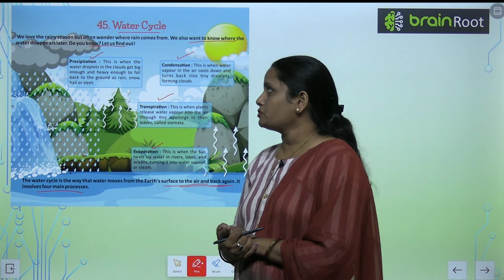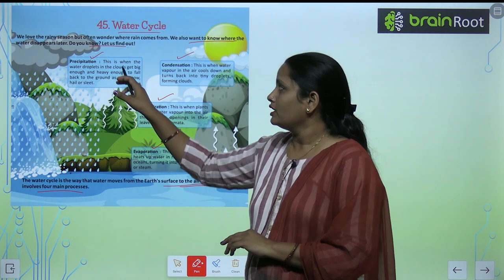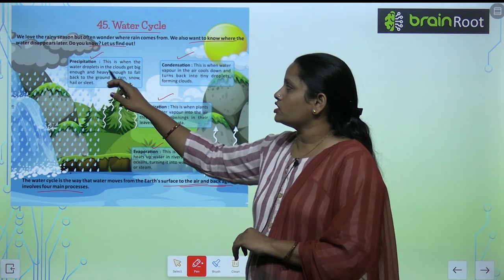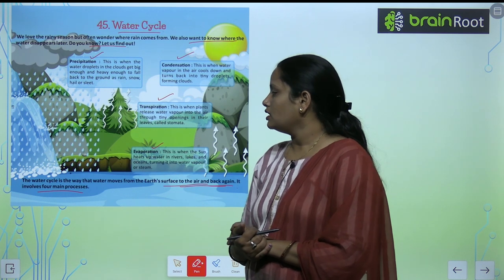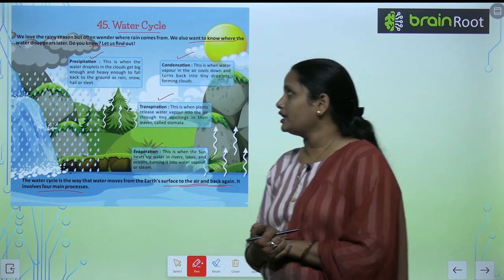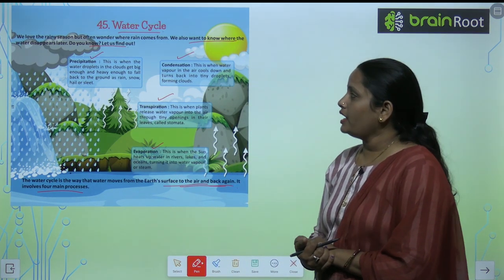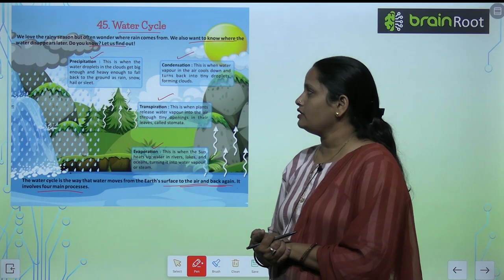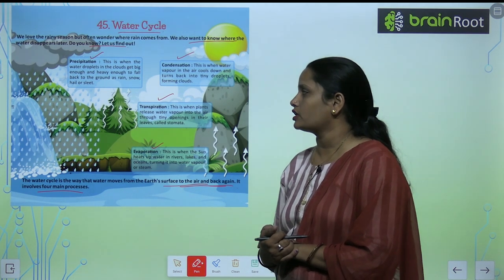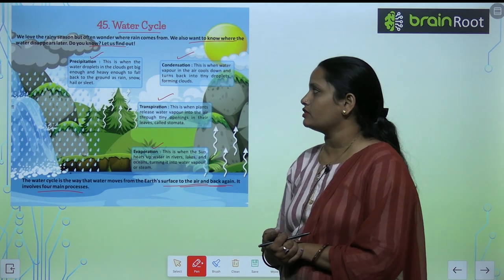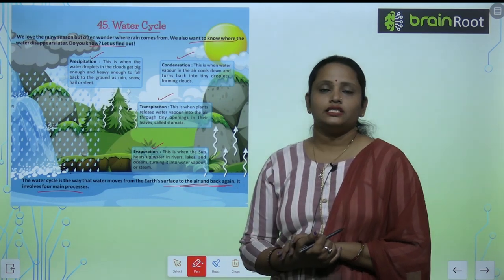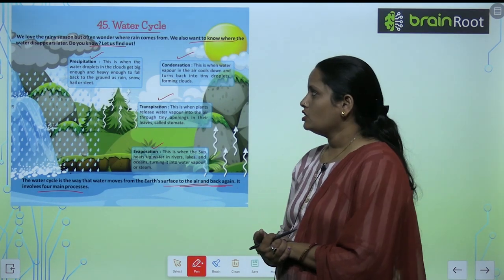What is precipitation? This is when the water droplets in the clouds get big enough and heavy enough to fall back to the ground as rain, snow, hail and sleet.